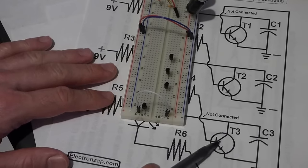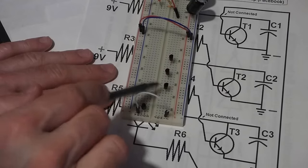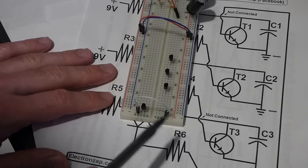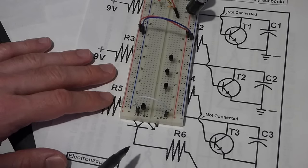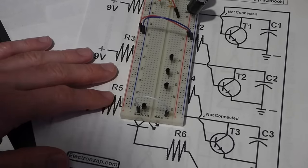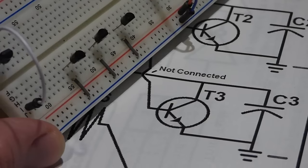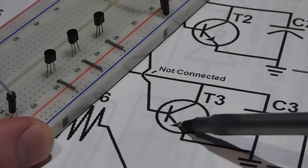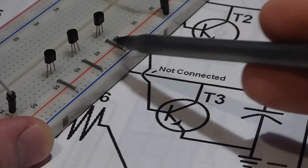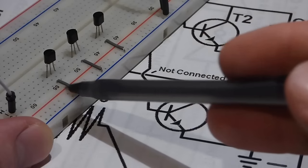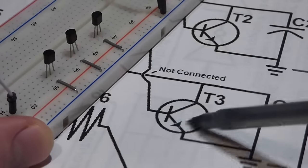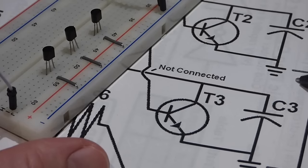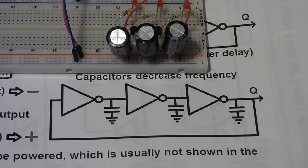We start with three transistors — these are NPN types (the arrow points out), and I'm using the 2N3904. The flat edge is to the right so the emitter is down at the bottom, and that connects right to ground (negative). You can see the ground symbol, and all three transistors do that.